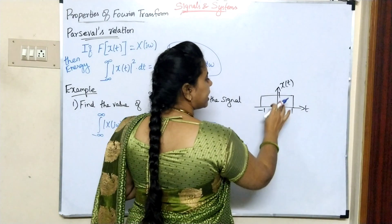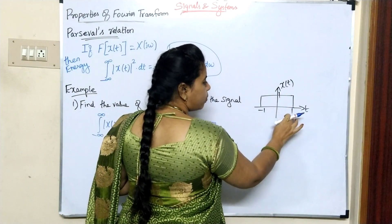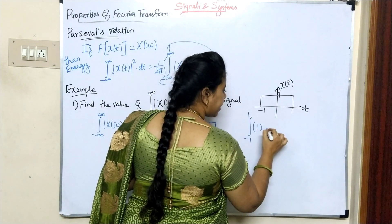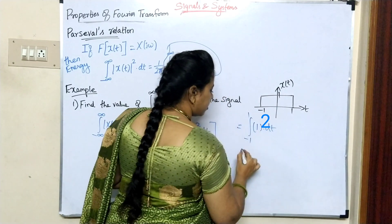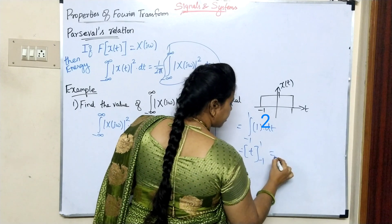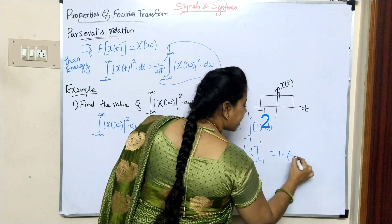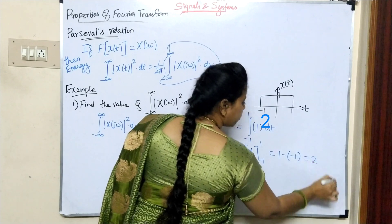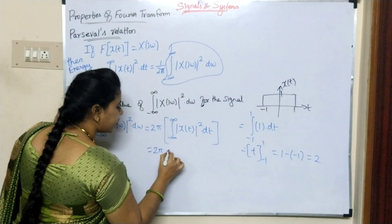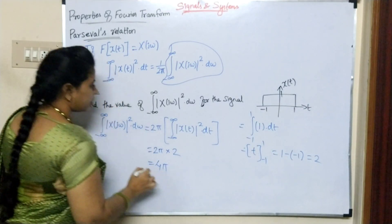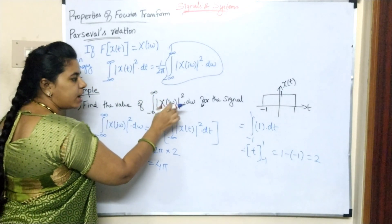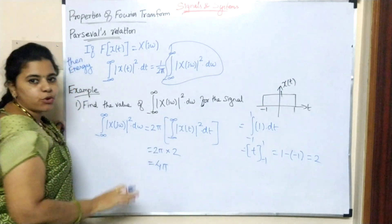x of t has value 1 from limit minus 1 to 1. So integral from minus 1 to 1 of x of t squared dt equals integral from minus 1 to 1 of 1 dt. Integrating t from minus 1 to 1, upper limit minus lower limit equals 2. So the value is 1 multiplied by 2, giving 2. Therefore 2pi into 2 equals 4pi. So the value of integral of modulus of x of j omega whole square into d omega equals 4pi.